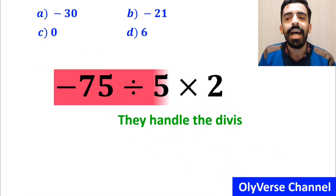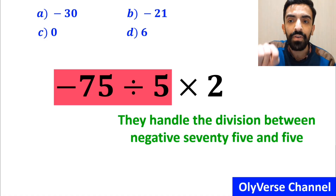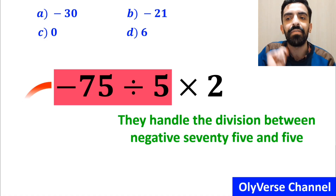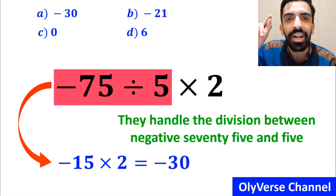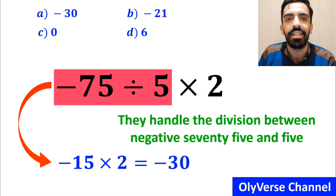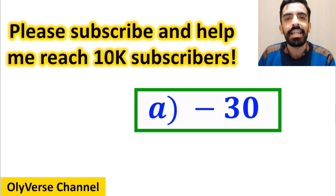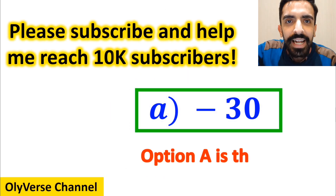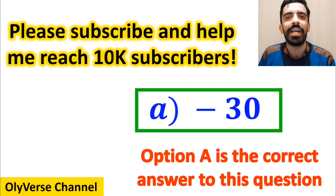In the final step, they handle the division between negative 75 and 5, and write this expression as negative 15 multiplied by 2, which eventually gives them the answer negative 30. Without any hesitation, they quickly say that option A is the correct answer to this question.